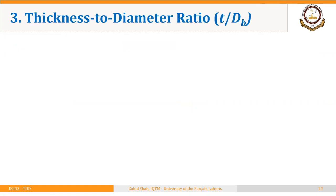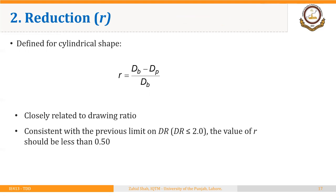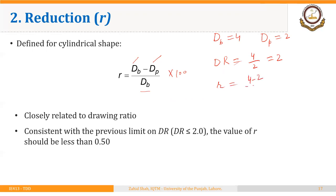Another important parameter to check drawing feasibility is reduction. Reduction is actually the drawing ratio measured as a percentage. It is the difference of the blank diameter and punch diameter, divided by the blank diameter, multiplied by 100. It is closely related to the drawing ratio and consistent with the previous limit — so the value of reduction R should be less than 0.50. For example, if the blank diameter is 4 and the punch diameter is 2, then the drawing ratio equals 4 over 2, which is 2, and reduction equals (4 minus 2) over 4, that is 0.50 or 50%.